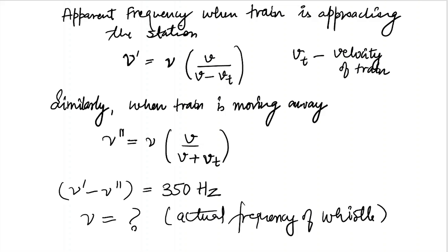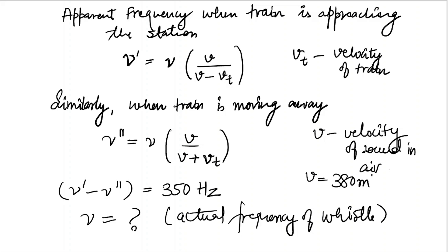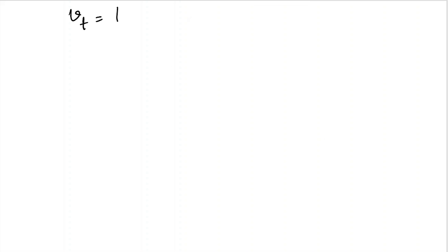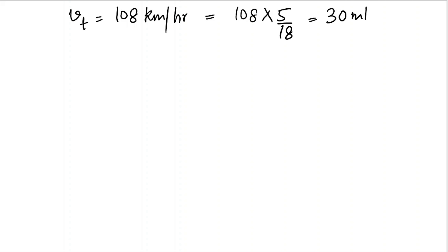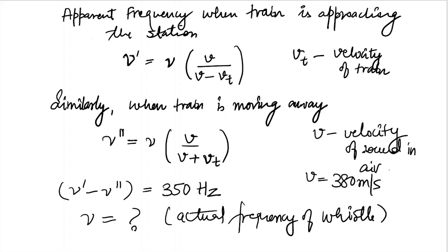Here, v is the velocity of sound in air, which is given as 380 meters per second. The velocity of the train is given as 108 kilometers per hour, which we convert into meters per second by multiplying by 5/18, giving us 30 meters per second.